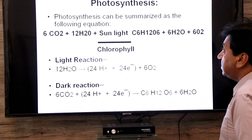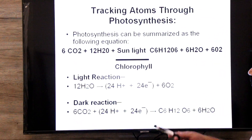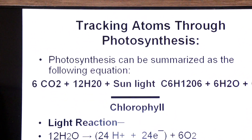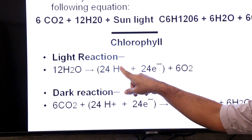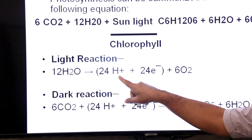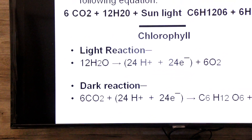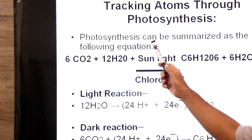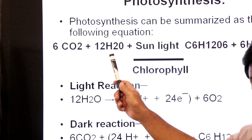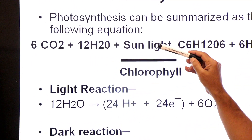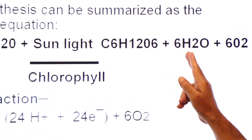Let's see the equation in more detail, tracking atoms through photosynthesis. Photosynthesis has two main reactions: the light reaction, which is light-dependent, and the dark reaction, which is light-independent. Six molecules of CO2 plus twelve molecules of water, with sunlight captured by chlorophyll, yield three products: glucose, water, and oxygen.